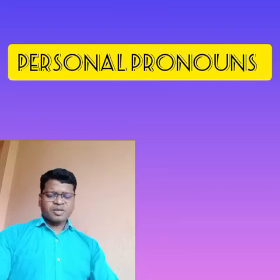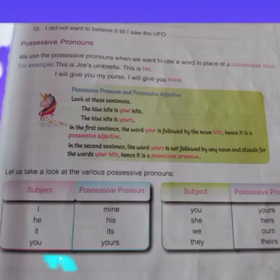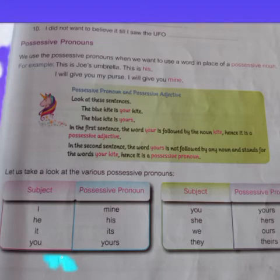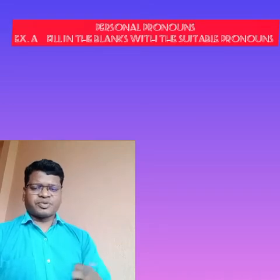We will be seeing each one with examples and try to do the exercises. First one is personal pronouns. Personal pronouns stand for persons or things. First person pronouns are: I, we, me, and us. Second person pronouns are: you. And third person pronouns are: he, she, it, they, him, her, and them. These are the examples of personal pronouns.